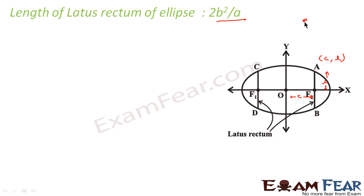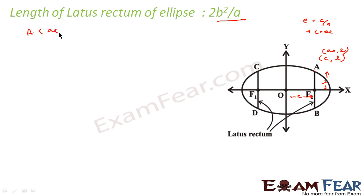We know that eccentricity E = C / A, so C = AE. We can also write the coordinates of point A as (AE, L). So the coordinates of A are (AE, L).